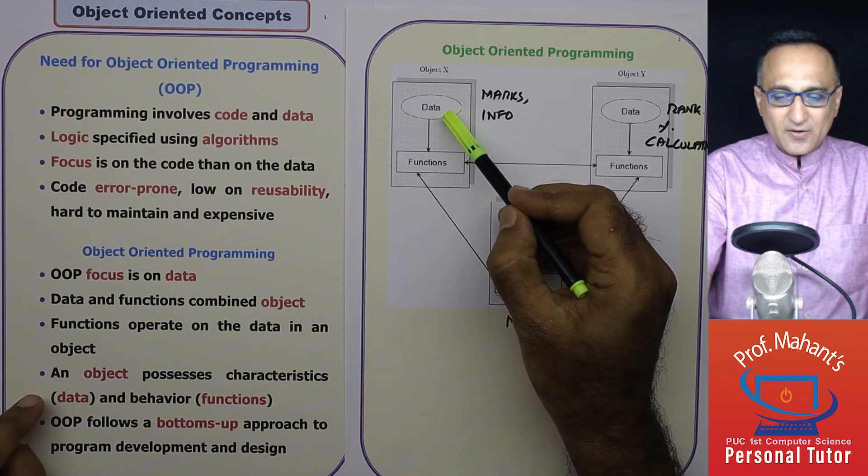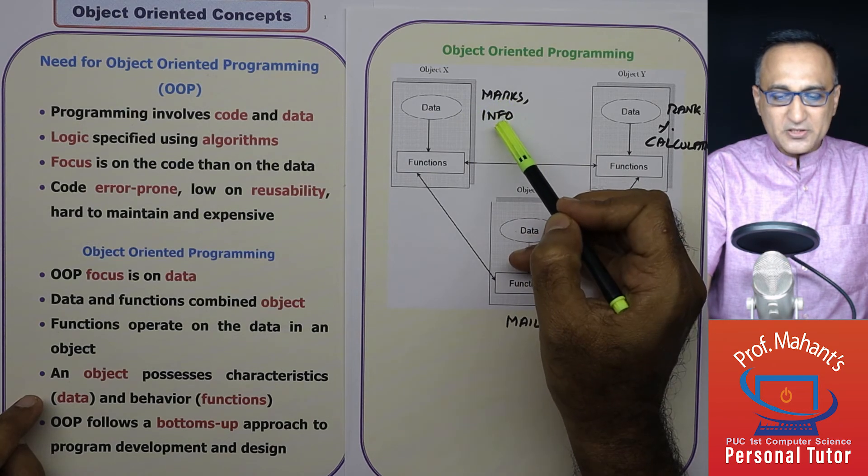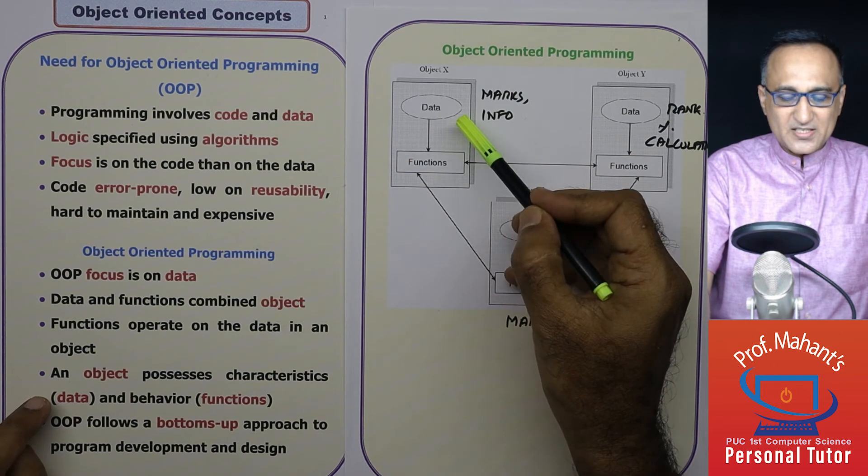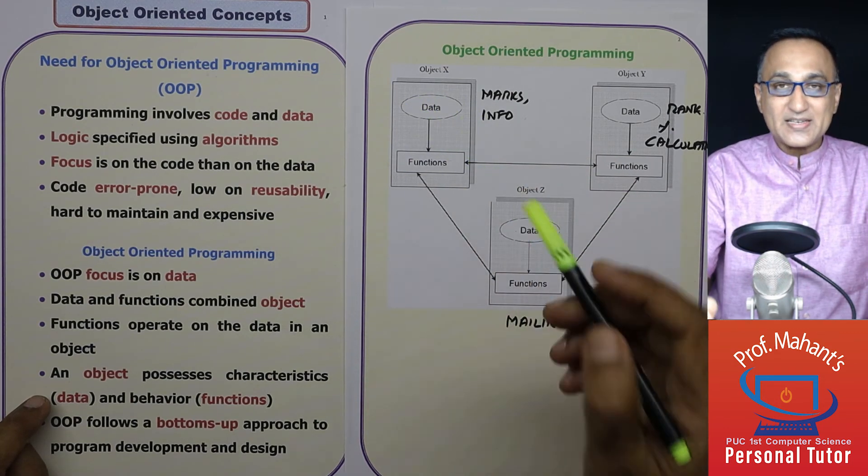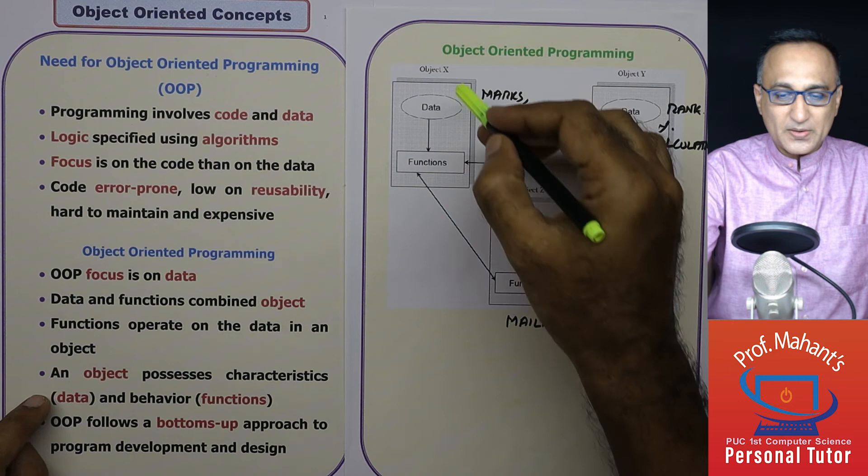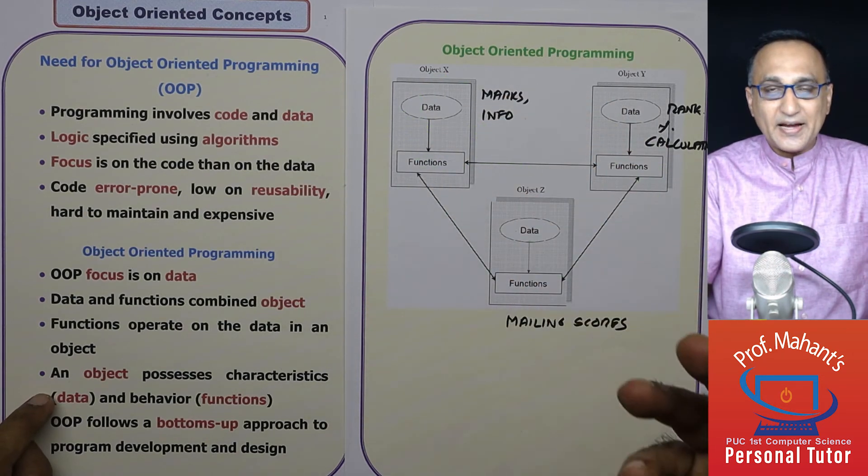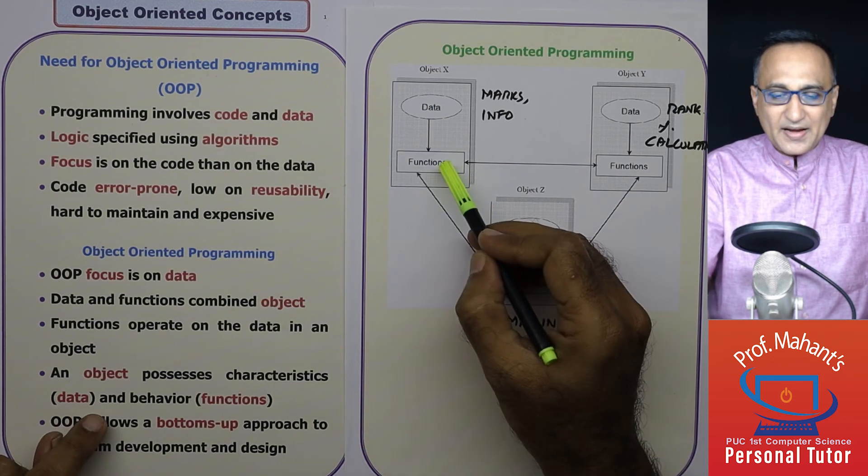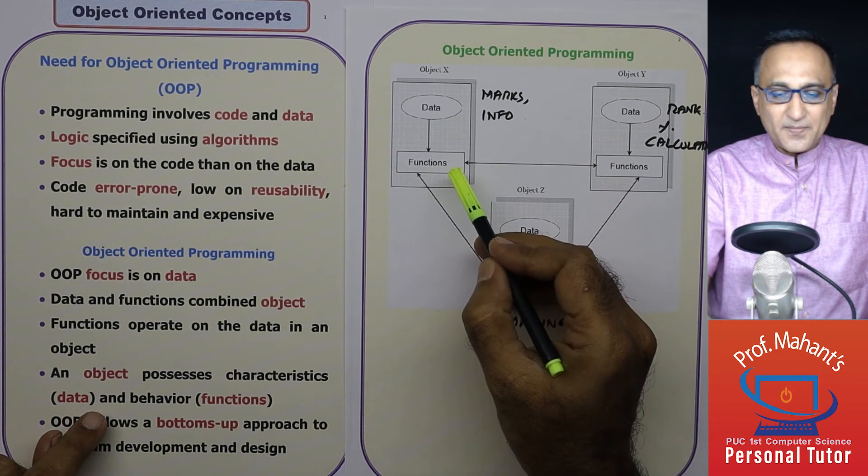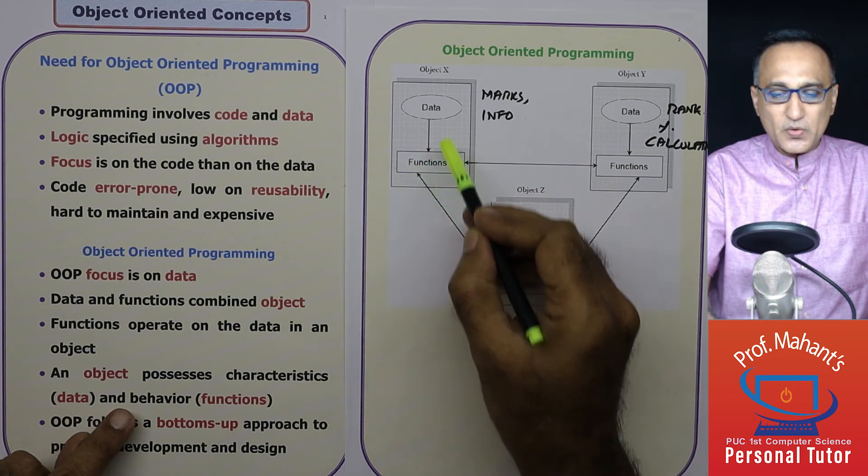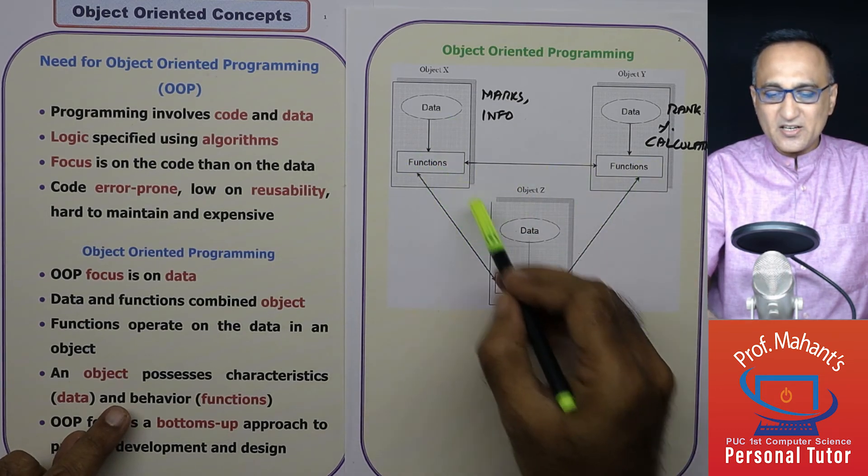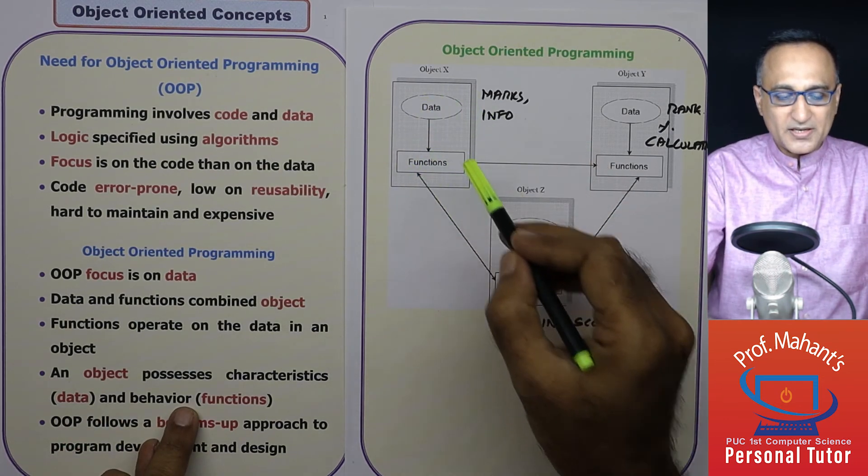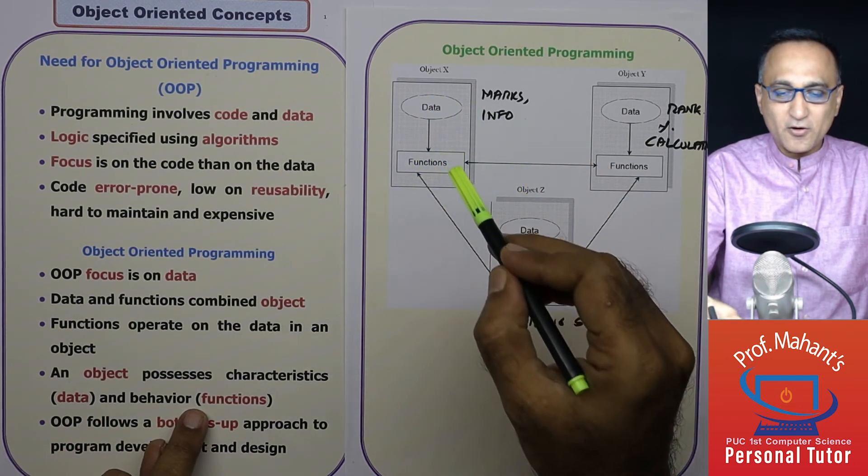This particular data, which contains the marks and personal information of the student, belongs to object X. This data is called the characteristics of this particular object X, characteristics means attributes like marks, weight, height and all. And if somebody requests this data, I have certain code which takes this data and sends it here or here. This code is known as the behavior of the object or also known as method or function.